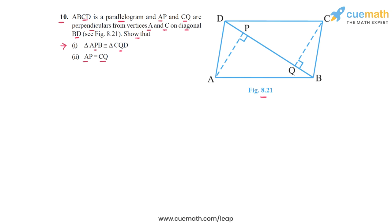So let's highlight these triangles in the figure. Triangle APB is APB, this triangle here, and then let's highlight triangle CQD. So CQ and D, this triangle. This is triangle CQD.